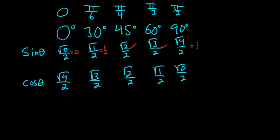This is 1. This is square root of 4 is 2, so it's 2 over 2, so it's 1. Here it's square root of 4 over 2, so 2 over 2, so it's 1. This one's the same, this one's 1 over 2, this one is 0.